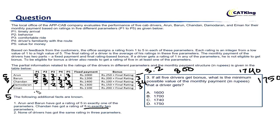For Imam, at least one 5 must be there. There is already a 2 in his ratings. To minimize: add another 2 and two 3s. Total = 5+2+2+3+3 = 15. Final rating = 15/5 = 3. Bonus = 3 × 200 = 600. Fixed = 1100. Total = 1700. So 1700 is the smallest monthly payment, meaning Imam gets the minimum monthly payment of 1700.